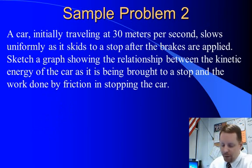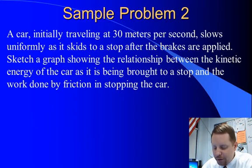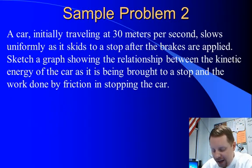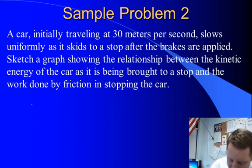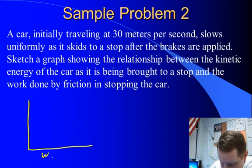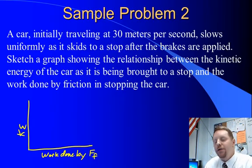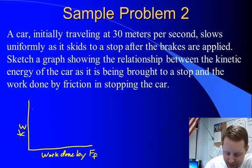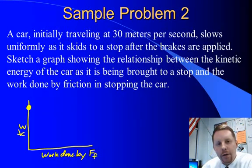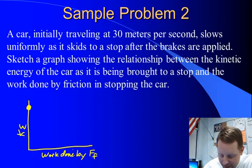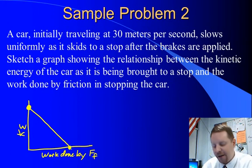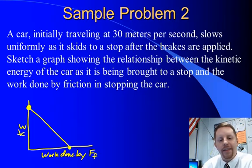A car initially traveling at 30 meters per second slows uniformly as it skids to a stop after someone hits the brakes. Sketch a graph showing the relationship between kinetic energy of the car and the work done by friction. Drawing the axes with work done by friction on the x-axis and kinetic energy on the y-axis: when no work is done by friction, the car has maximum kinetic energy. As friction does more work, the car slows down and has less and less kinetic energy, until it reaches zero. So the graph is a straight line decreasing from upper left to lower right.